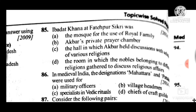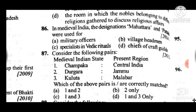Question 87: Consider the following pairs of medieval India states and their present regions. Answer is B — two only; Durugara — Jammu is correct; the rest are incorrect.